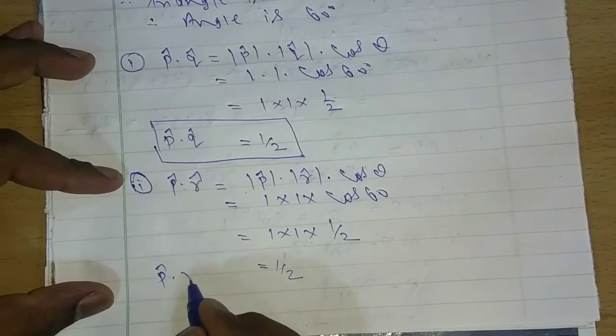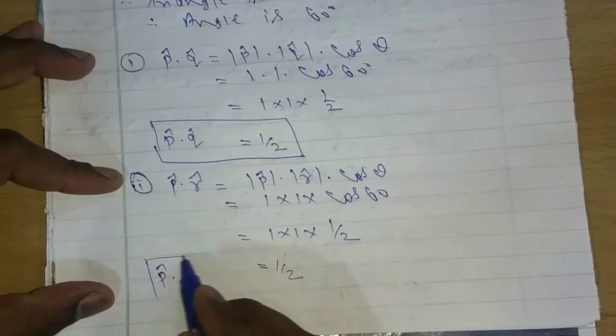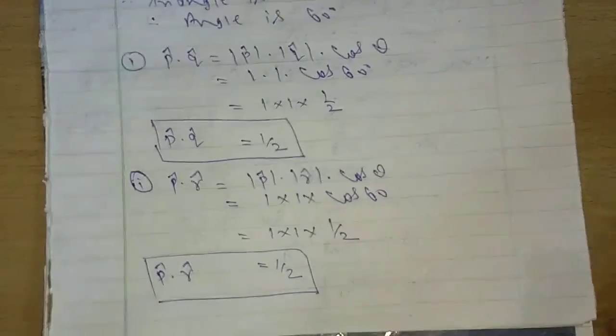Okay, so we can say p cap dot r cap value will be 1 by 2. Thank you.